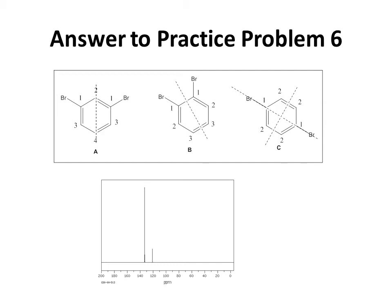In isomer B, we can split the molecule with a mirror plane down the middle between the carbon-bromine bonds, giving three unique carbons that reflect upon each other. In isomer C, there are two reflection planes: one shows that carbon 1, attached to the bromines, is identical in each reflected position, and in the perpendicular direction, carbon 2 carbons are also identical to each other. That means isomer C has only two unique carbons — and since the NMR spectrum matches that, the answer is C.